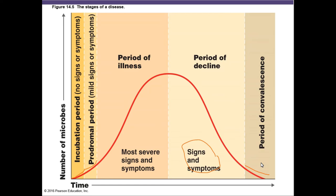The convalescence period is when the body is readjusting and healing from whatever lesions the microbe caused in the tissues. For example, with COVID-19, after the decline period, a person can still go through a long convalescence. That convalescence period can be shorter or longer depending on the severity of the damage. Severe COVID cases can cause lesions in the lungs, reducing oxygen intake, making healing take much longer.